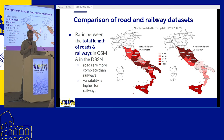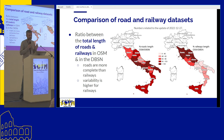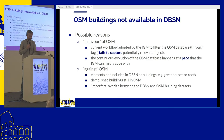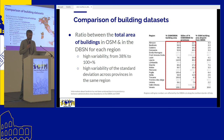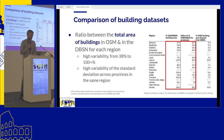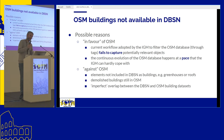A quick comparison on road length and railway length in the dataset — we haven't completed this for all of Italy — but again there is great variability between regions. And it's not only about regions: within the same region, provinces also have high variability. So it's really a local issue that must be addressed if we want to use or enrich that information in OpenStreetMap.